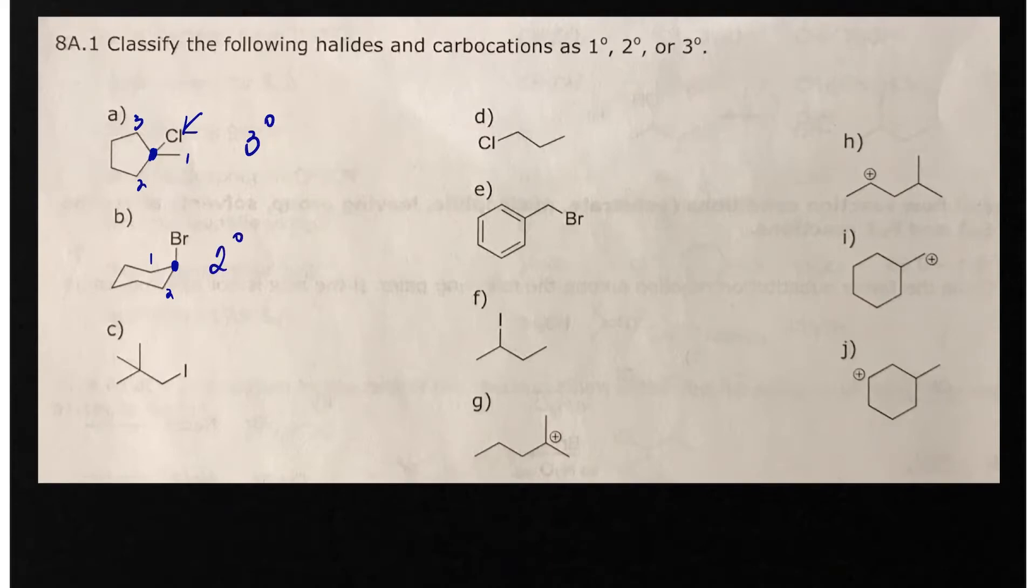In molecule C, this is an iodine—it looks weird the way it's drawn. Here's the alpha carbon, connected to a single carbon right next to it, so this is primary.